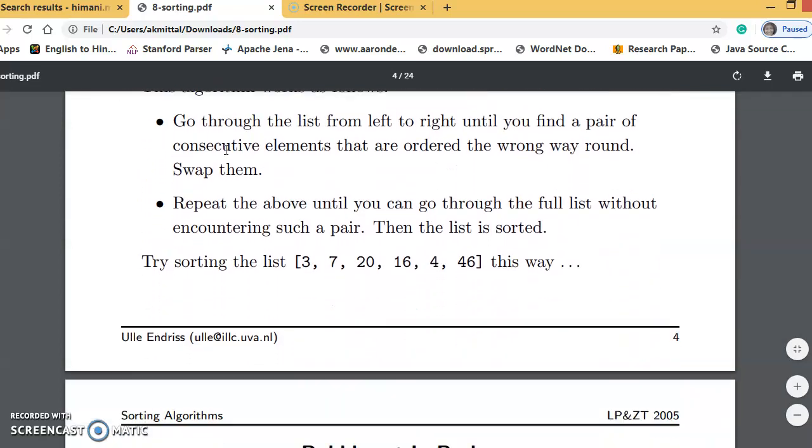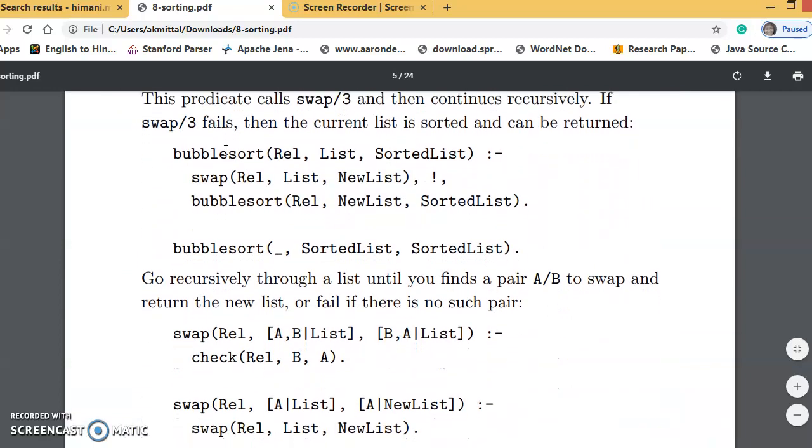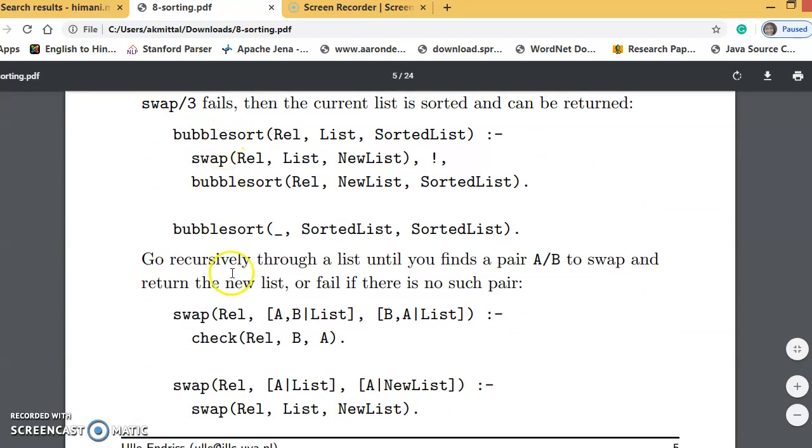Now, coming to the bubble sort algorithm itself. Bubble sort will consist of two predicates: one is bubble sort and one is swap. If the list is already sorted, then we want to copy the list as it is in the output and return this as answer.